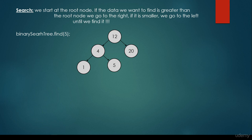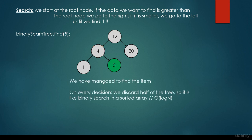What if we would like to find the 5? We start at the root node again — it is the 12. We come to the conclusion that 5 is smaller than 12, so we go to the left. We come to the conclusion that 5 is greater than 4, so we have to go to the right. And basically this is the item we are looking for. So on every decision, we discard half of the tree, so it is like binary search in a sorted array. And that's why this find operation is going to have logarithmic time complexity, so O(log n).